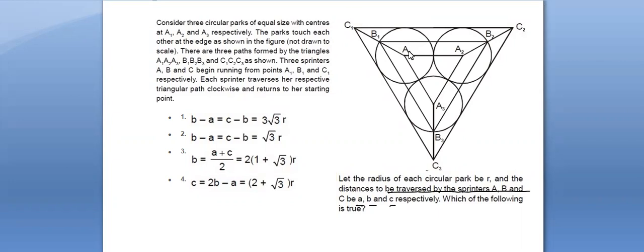First of all, we can say that clearly from symmetry, if we drop the perpendicular, this is going to be a 30-60-90 triangle because this will be 60 degrees equilateral, which gets bisected as 30 and 30. If that is the case and this is, let's say, r and that's 30, then this is r by 2.